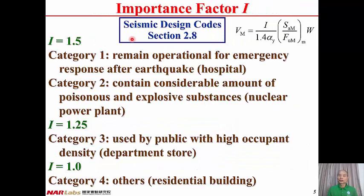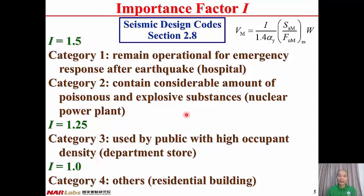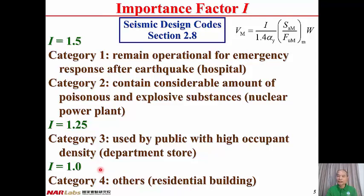From Seismic Design Code section 2.8, all buildings are classified into four categories. Category 1: buildings that remain operational for emergency response after earthquakes, such as hospitals — importance factor I equals 1.5. Category 2: buildings containing considerable amounts of poisonous and explosive substances, such as nuclear power plants — I equals 1.5. Category 3: buildings used by the public with high occupant density, such as department stores — I equals 1.25. Category 4: other buildings, like residential buildings — I equals 1.0.